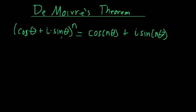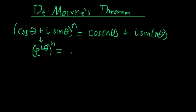If we look at this, we can actually show that we can easily prove this from Euler's formula. We know that this expression in the parentheses is just e to the i theta, all raised to the n power. And we know from our property of exponents that this is equal to e to the i of n times theta. Then, using Euler's formula again, we can show that this expression is equal to cosine n theta plus i times sine n theta.